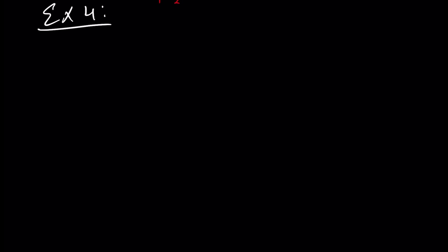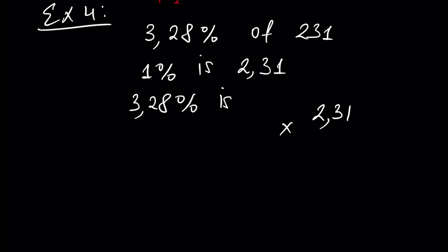Example 4: 3.28% of 231. 1% of our number is 2.31, and 3.28% is - we again perform calculations - 2.31 times 3.28.